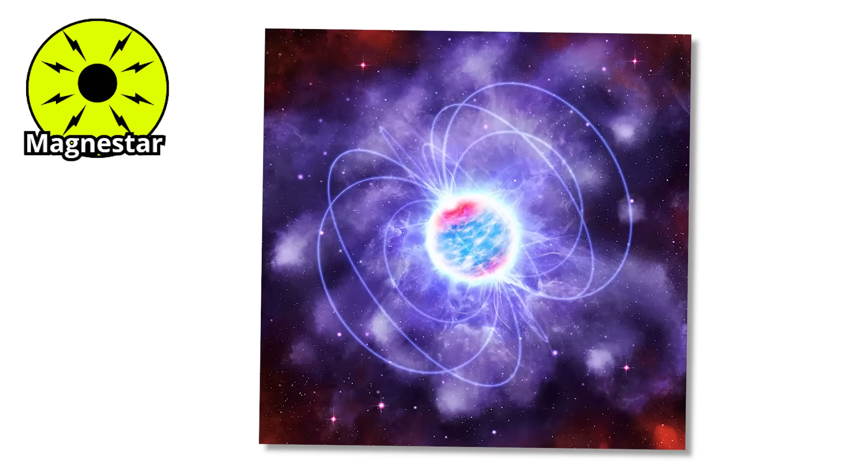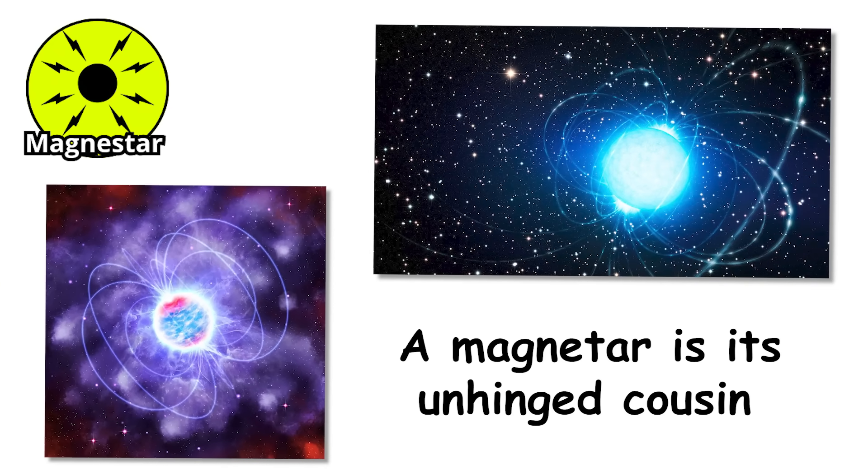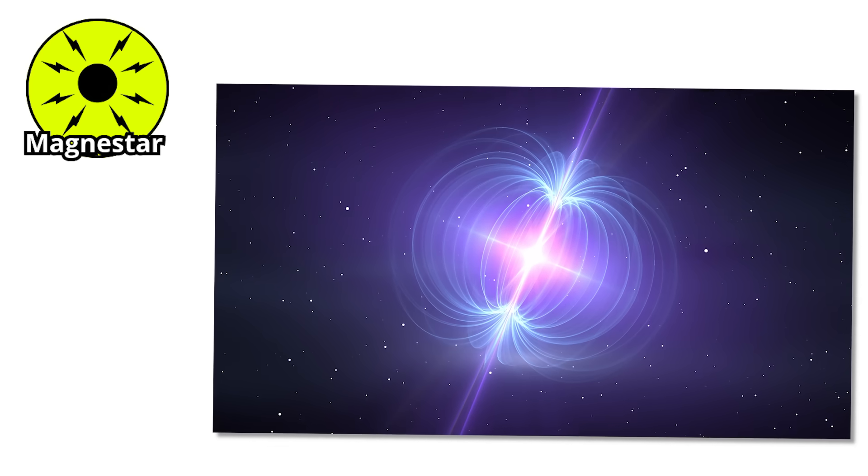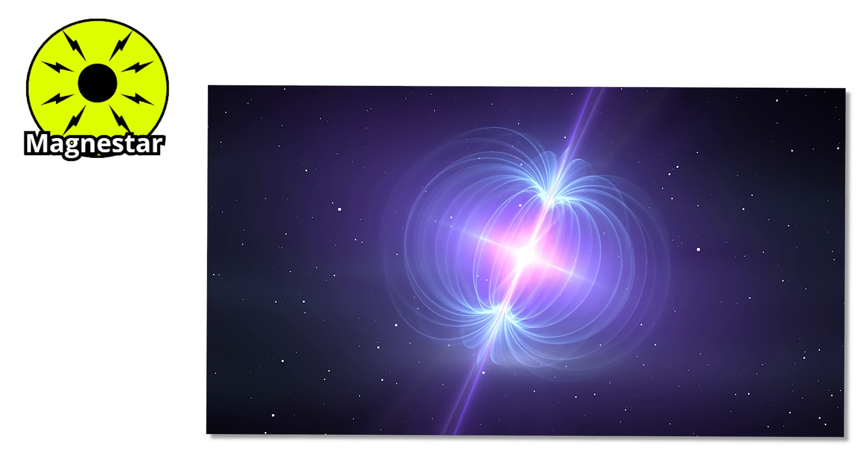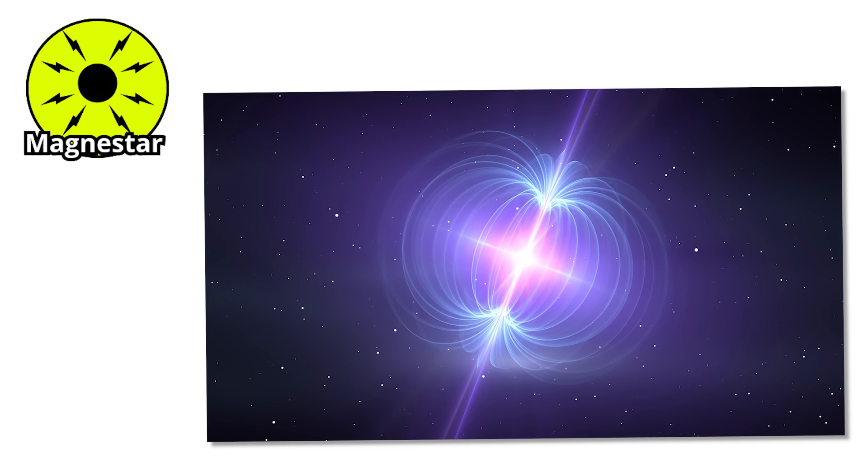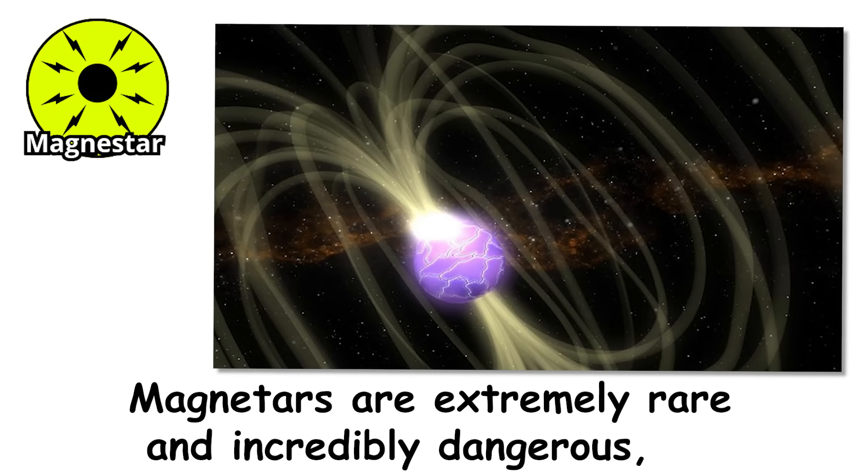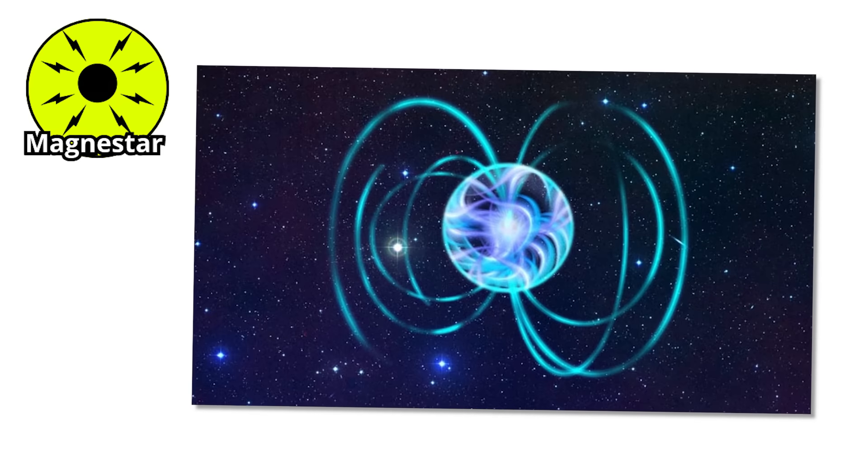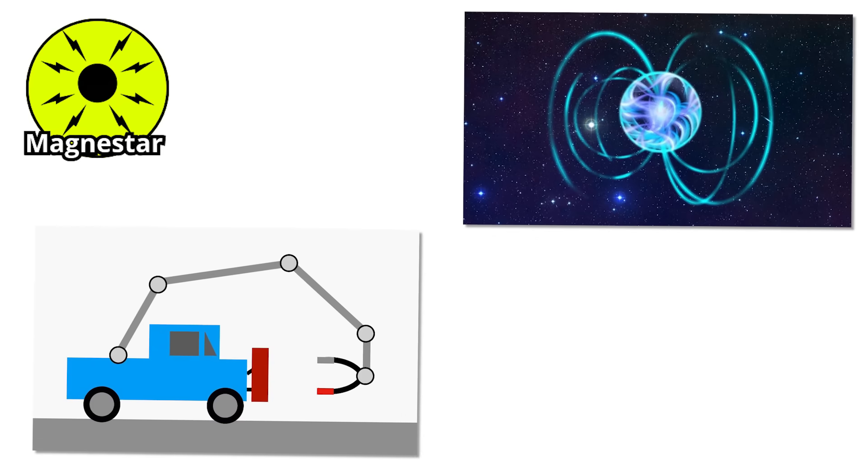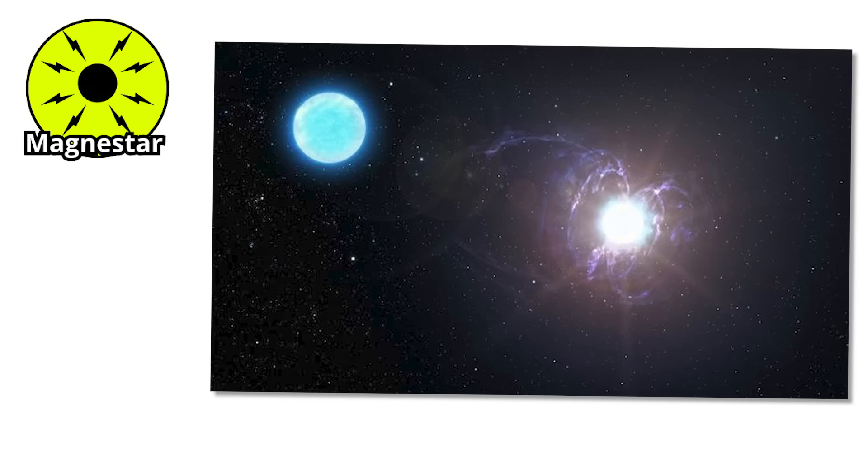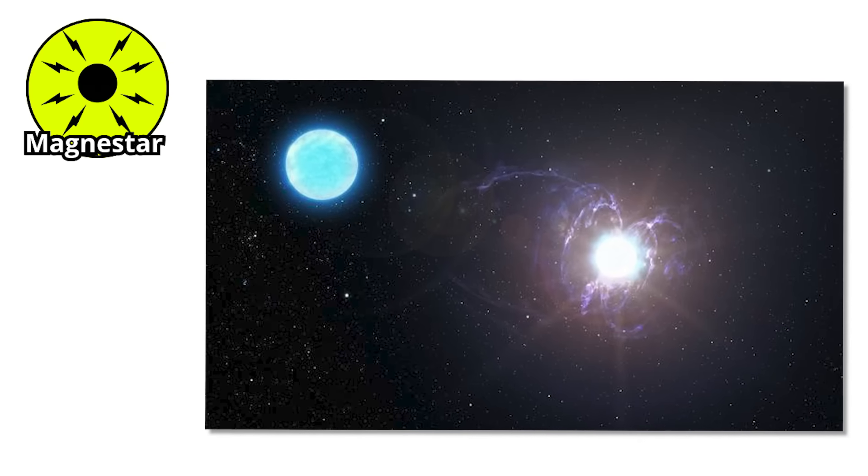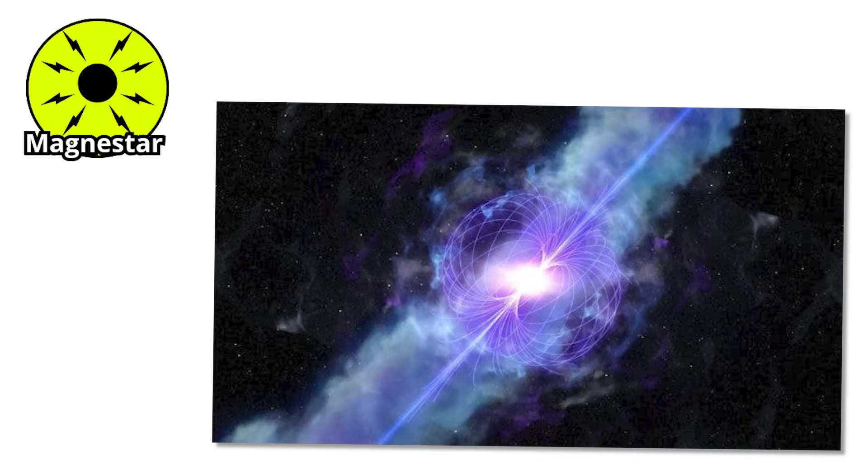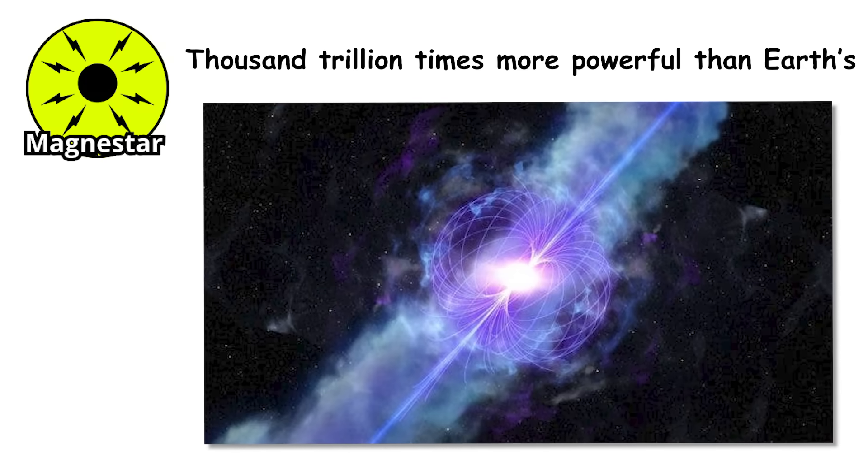Number 8. If a neutron star is terrifying, a magnetar is its unhinged cousin who doesn't play by the rules. This is what happens when the universe decides a regular neutron star is just not dramatic enough. Magnetars are extremely rare and incredibly dangerous, even from a distance. What sets them apart is their magnetic field. The strongest magnet ever created on Earth could lift a car. A magnetar's field would rip the atoms out of that car from halfway across the moon.